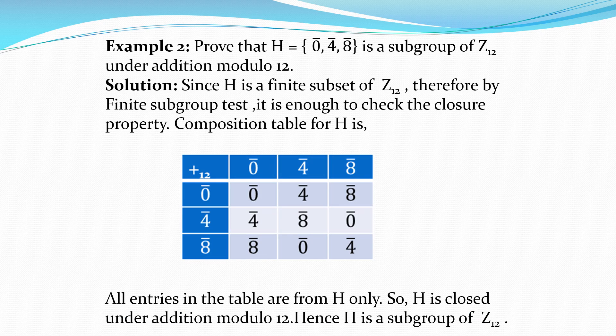Second example: Prove that H = {0̄, 4̄, 8̄} is a subgroup of Z₁₂ under addition modulo 12. Since H = {0̄, 4̄, 8̄} is a finite subset of Z₁₂, and Z₁₂ = {0̄, 1̄, 2̄, ..., 11̄} contains 12 elements, H is a finite subset of Z₁₂. Hence we can apply the finite subgroup test. Clearly H is a non-empty subset of Z₁₂.